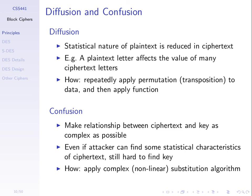Another way to think about diffusion: the substitutions get applied on all different bits of the input, not just some of them. Confusion is about making the relationship between the ciphertext and the key complex, so it's hard to work backwards. Even if the attacker knows the ciphertext and the plaintext, it should be hard to find the key — that's what confusion tries to do. Even if the attacker knows some statistical characteristics of the ciphertext, with confusion it should still be hard to find the key. Confusion is usually implemented using substitution — the S-boxes in DES and other ciphers.